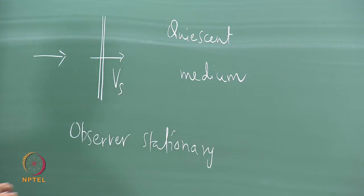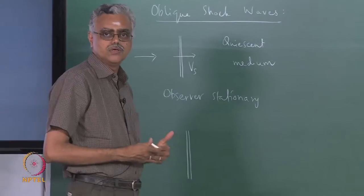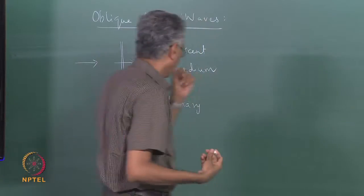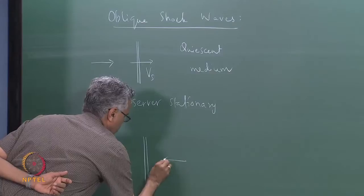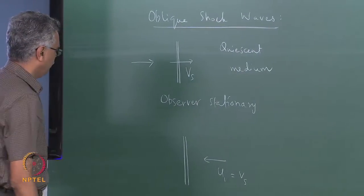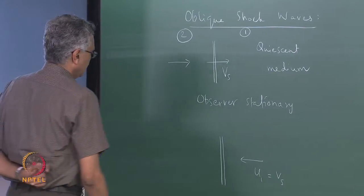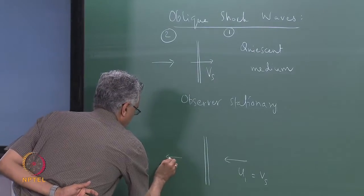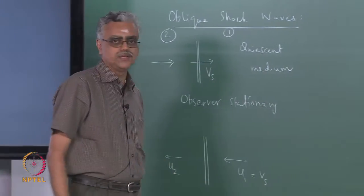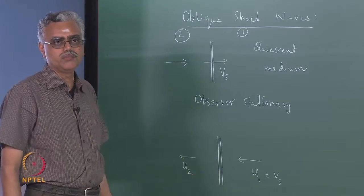When the observer moves along with the shockwave, the shockwave appears stationary, and the flow seems to approach with a certain velocity and recede with another velocity. The velocity with which the flow approaches is labeled U1, which is equal to the shock speed. State 1 approaches and state 2 recedes with velocity U2. We showed that U2 is less than U1 — that is the permitted compression solution.